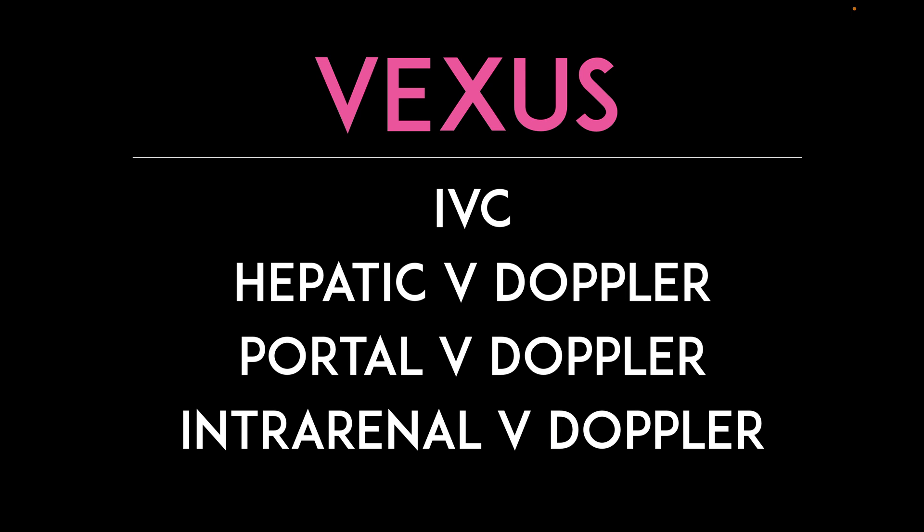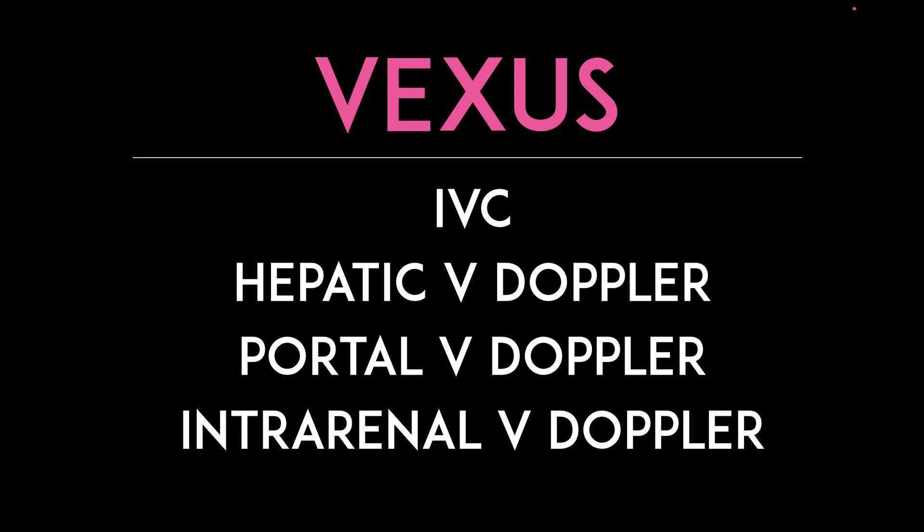The Vexus score is going to include the IVC as kind of an entry into it. Then you're going to obtain a hepatic vein Doppler waveform, a portal vein Doppler waveform, and an intrarenal vein Doppler waveform.